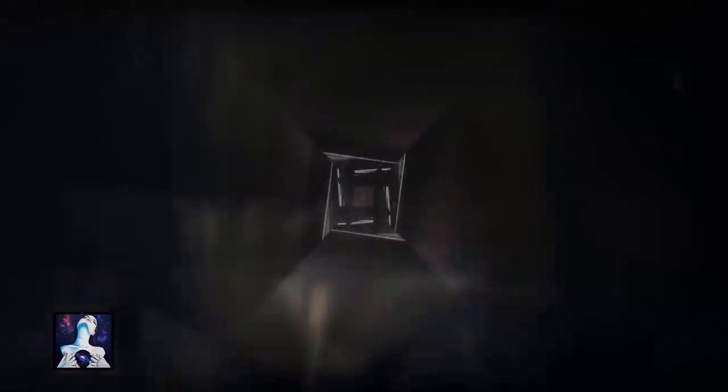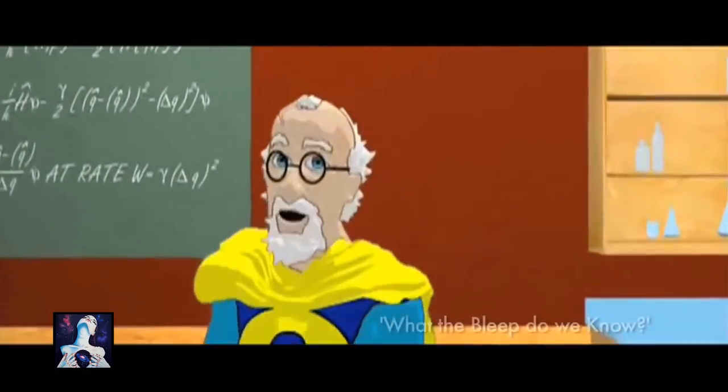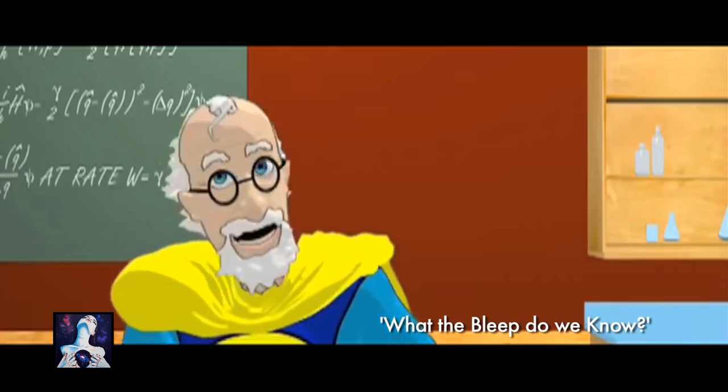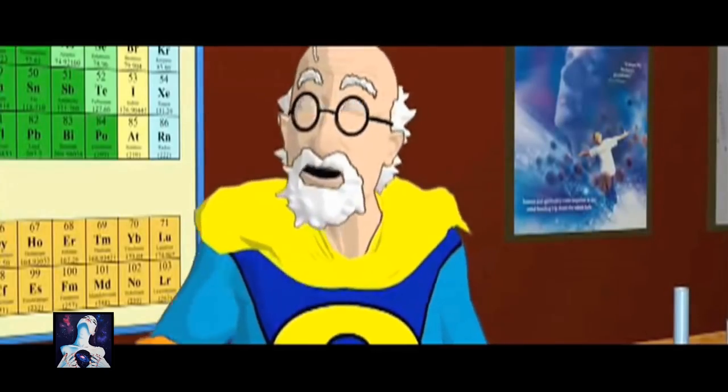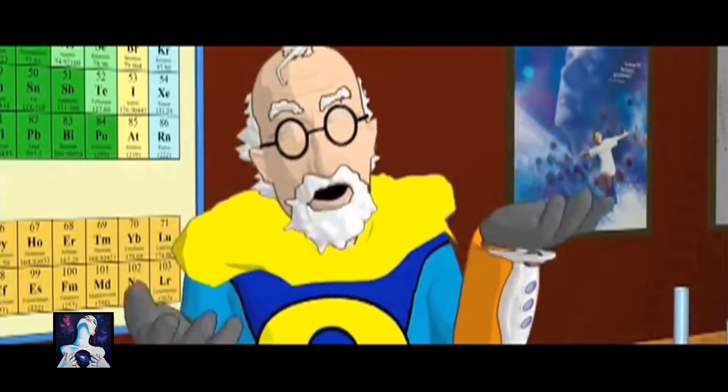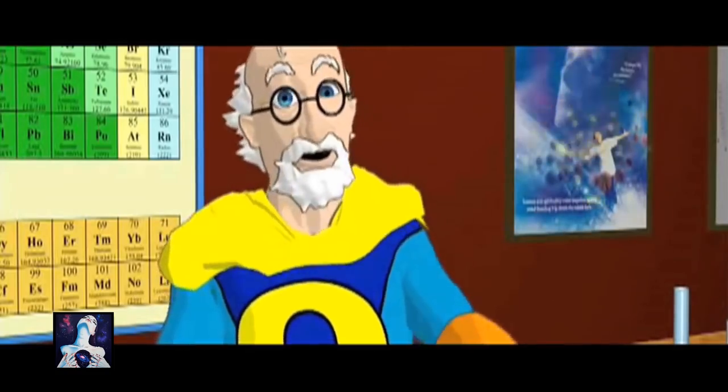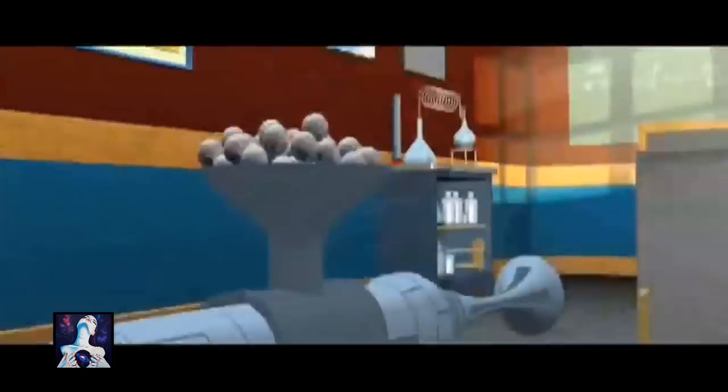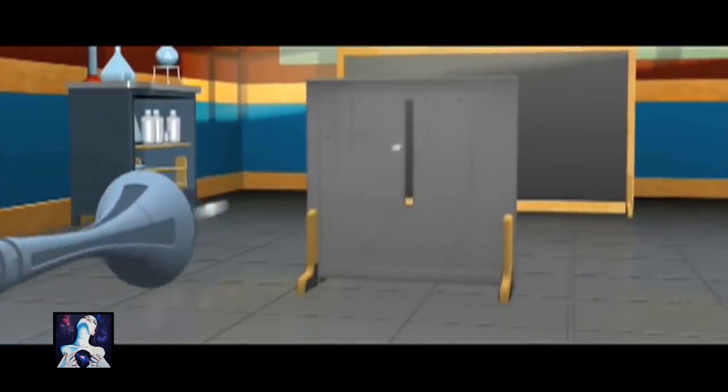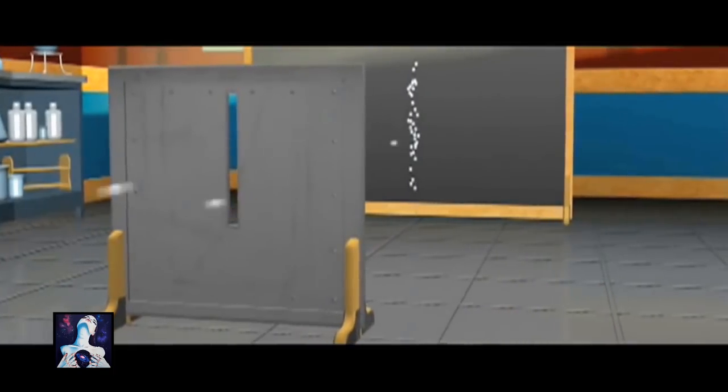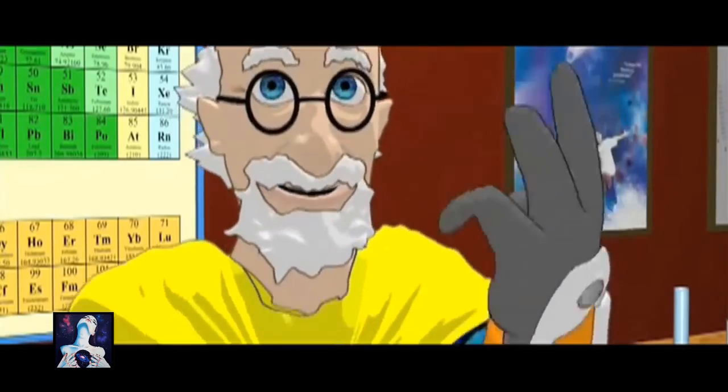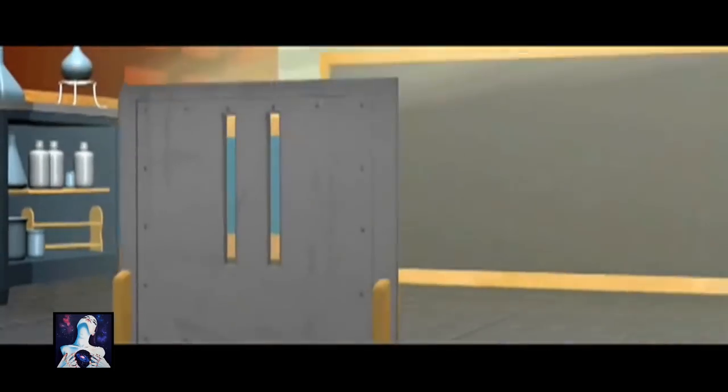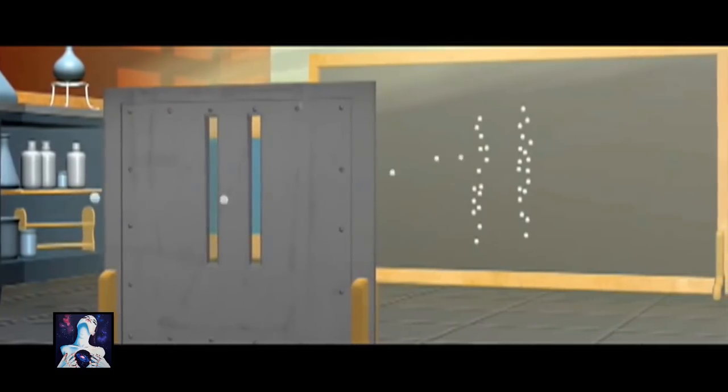And here we are, the granddaddy of all quantum weirdness, the infamous double-slit experiment. To understand this experiment, we first need to see how particles, or little balls of matter, act. If we randomly shoot a small object, say a marble, at the screen, we see a pattern on the back wall where they went through the slit and hit. Now, if we add a second slit, we would expect to see a second band duplicated to the right.